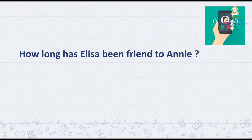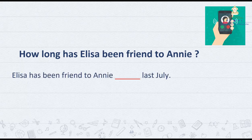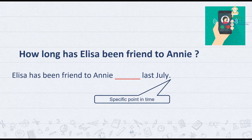How long has Elisa been friends with Annie? Elisa has been friends with Annie since last July. July is a specific point in time, so we use 'since'. Elisa has been friends with Annie since last July.